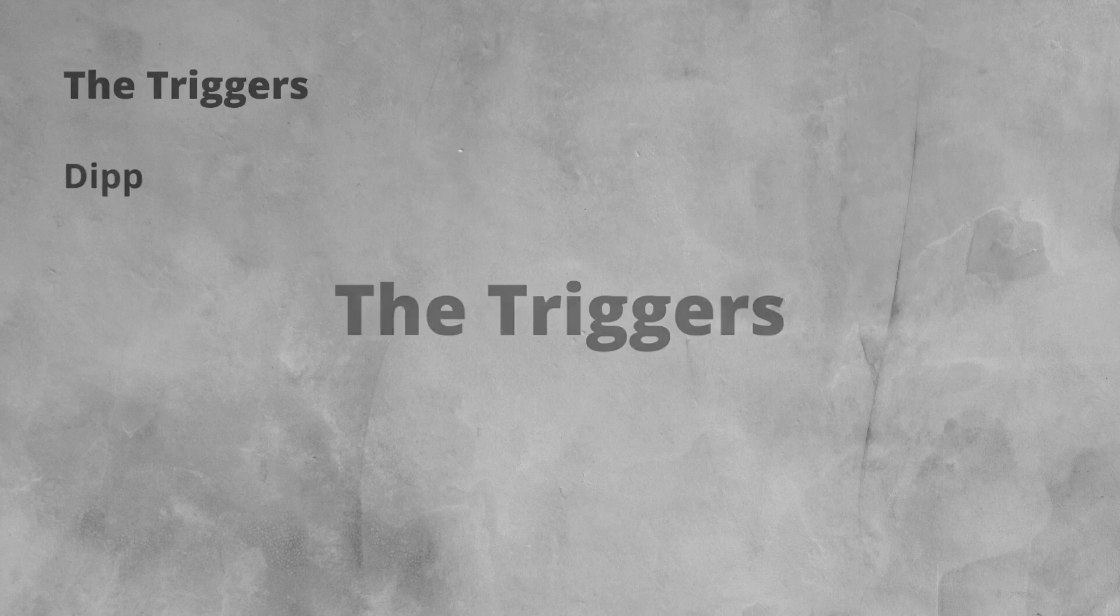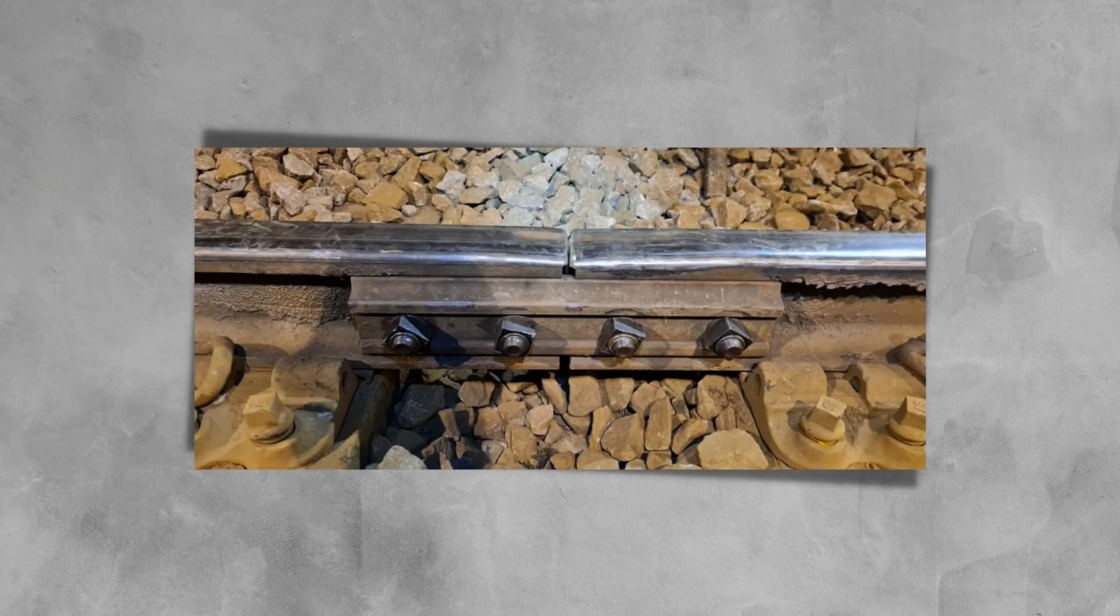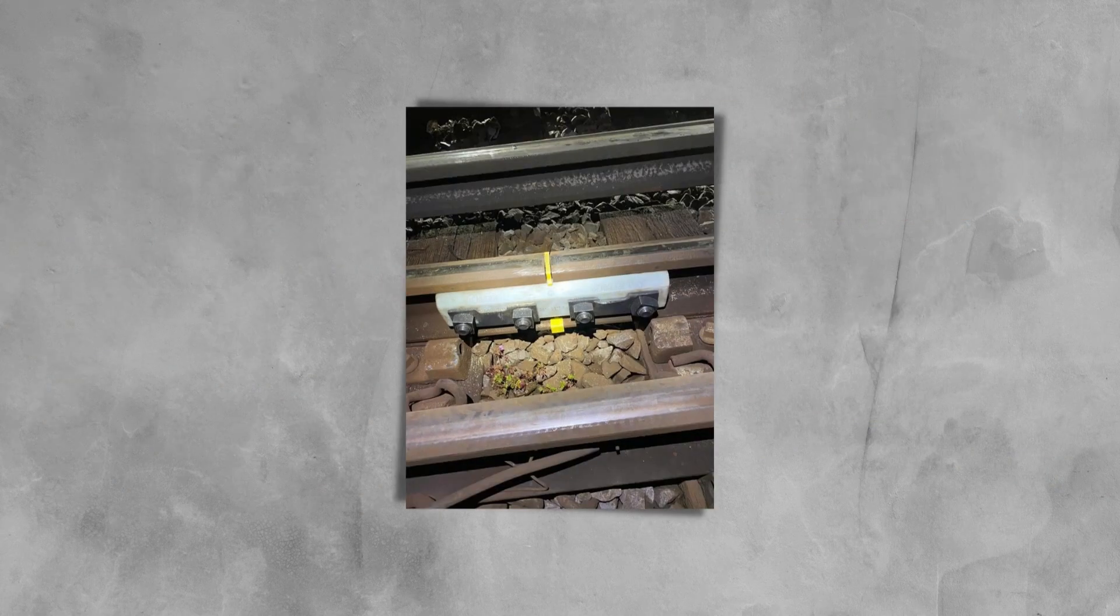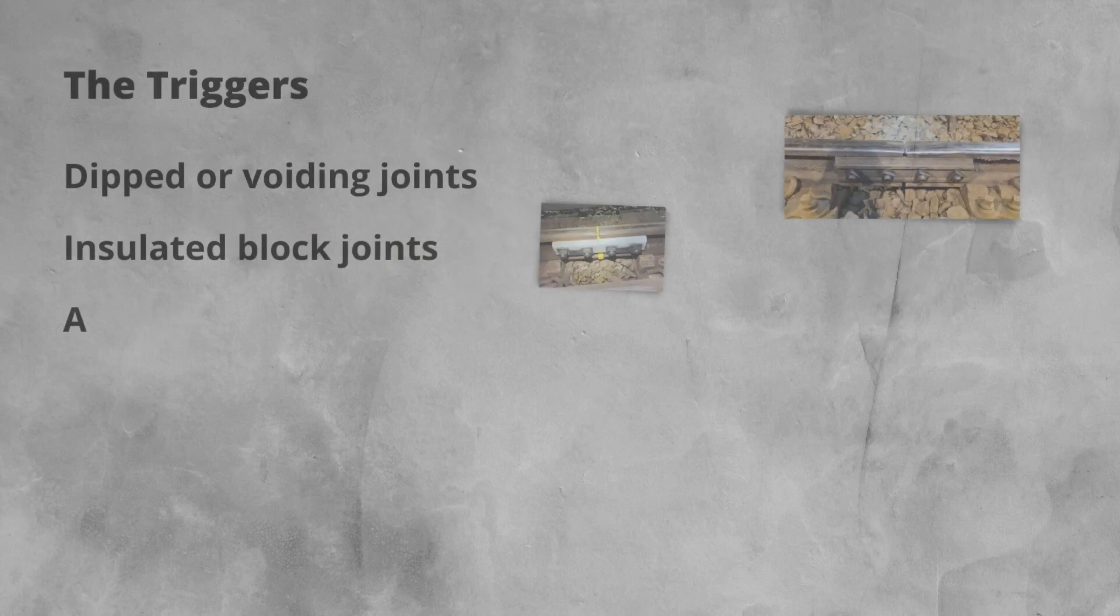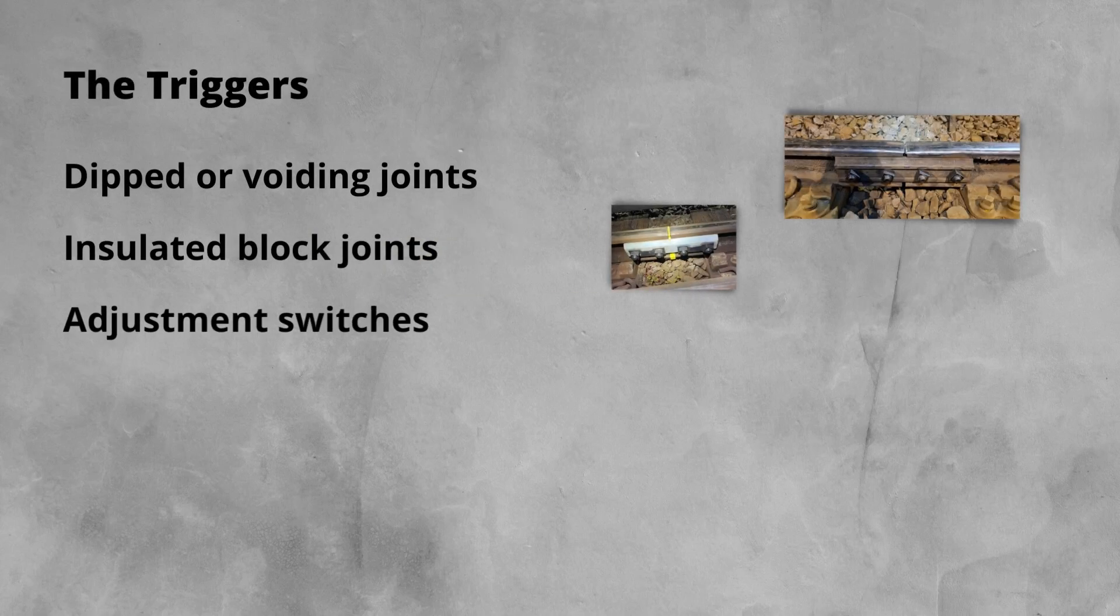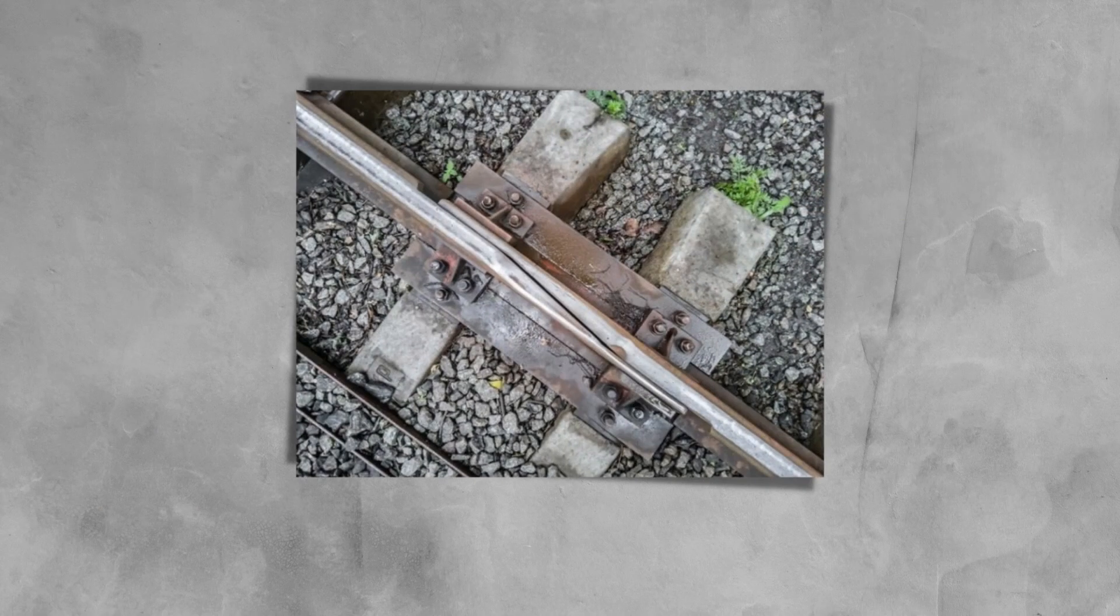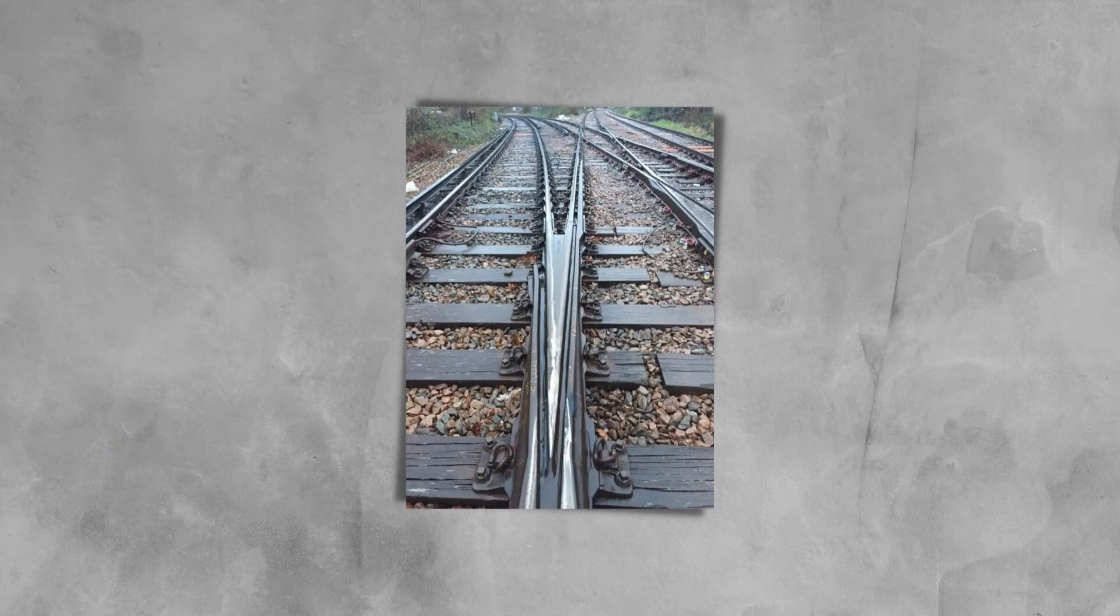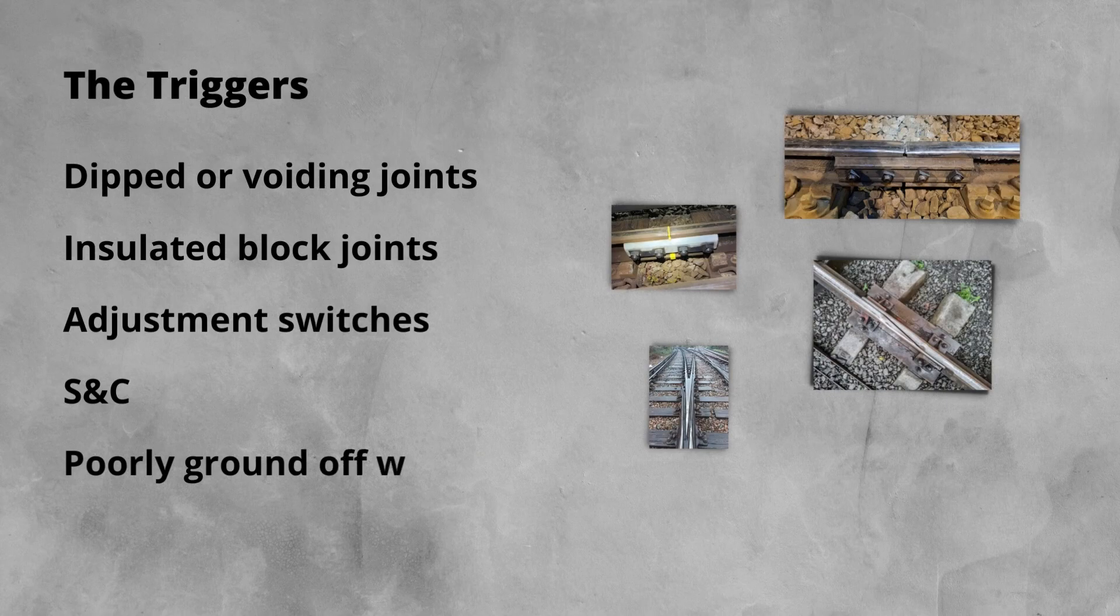So what are these triggers? The common triggers are dipped or voiding joints, common to be either on a single or both rails; insulated block joints; adjustment switches; crossings, particularly at the crossing nose or if voiding is present; welds that haven't been ground off level when they've been formed; and most commonly wetbeds.